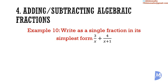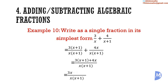Example 10. Write as a single fraction in its simplest form: 3 over x added to 4 over (x plus 1). The LCM of x and (x plus 1) is x multiplied by (x plus 1). To express 3 over x with this denominator, we multiply the denominator by (x plus 1) and the numerator by (x plus 1) as well. For the second fraction, we multiply the numerator by x, giving 4x. With both fractions over the same denominator, we add the numerators. Expanding brackets: 3(x plus 1) plus 4x gives 3x plus 3 plus 4x. Simplifying: 3x plus 4x is 7x, so the answer is (7x plus 3) over x(x plus 1).